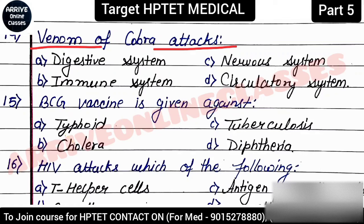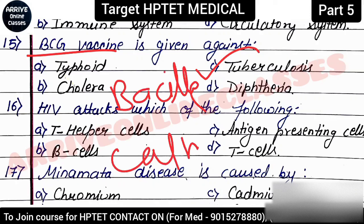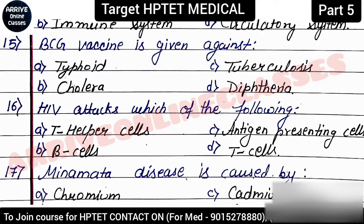Next question: 'Venom of cobra attacks?' The venom of a cobra attacks our nervous system — a general straightforward question. Next question: 'BCG vaccine is given against?' BCG vaccine is given for tuberculosis — option C is correct. BCG full form is Bacillus Calmette-Guérin. This is considered a strong vaccine and can provide protection for approximately 15 years.